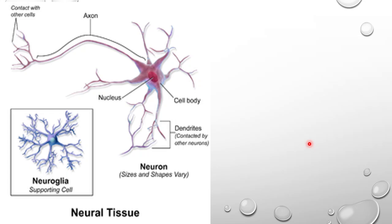Next, we have neural tissue. The neural tissue is made up of neurons and neuroglia. Neurons are cells — rather the largest type of cells found in the body. They are specially designed and modified, having a large cell body with the nucleus and other cell organelles. The plasma membrane has extensions in the form of dendrites.